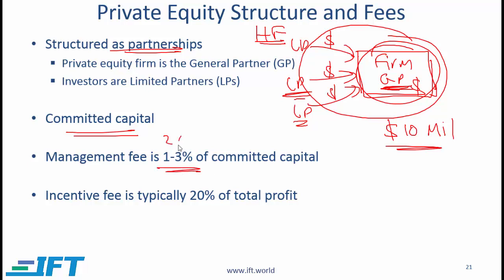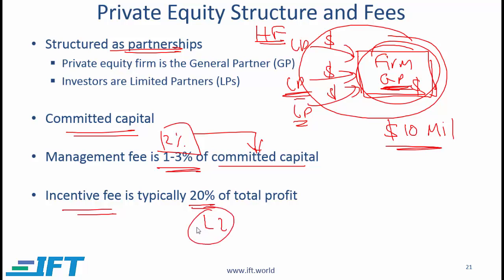The management fee ranges between 1% and 3%; a fee of 2% is quite common, and this is a percentage of the committed capital. There is also an incentive fee which is typically 20% of profit. There are several related concepts such as clawbacks and exactly how this 20% is charged. While these concepts are mentioned briefly at Level 1, they are covered in detail at Level 2, so I will not spend much time on these sub-concepts here.